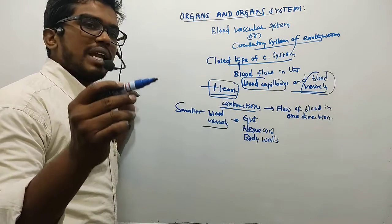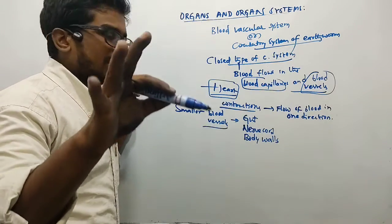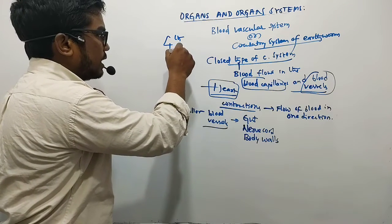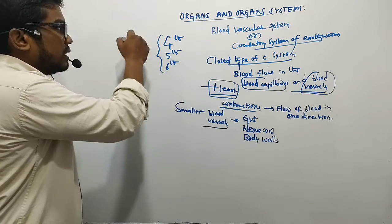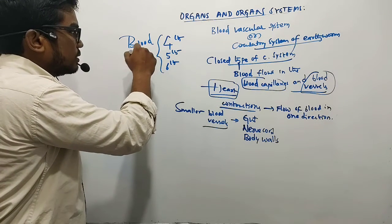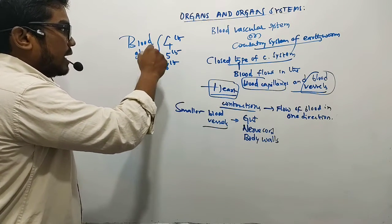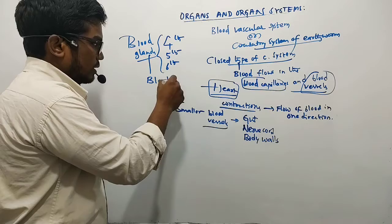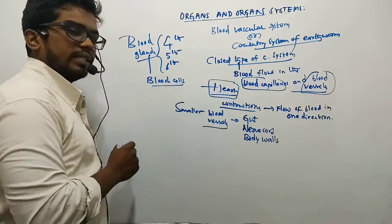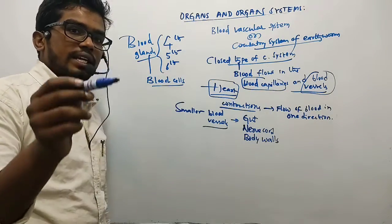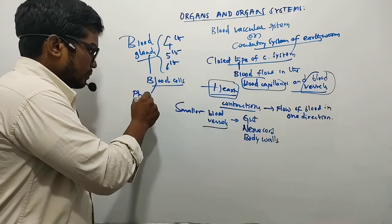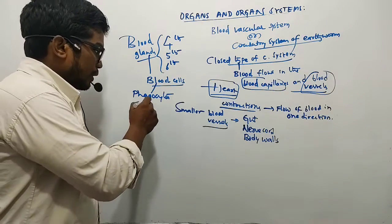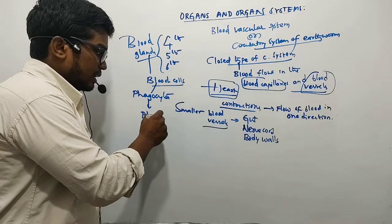There are blood glands present in the fourth, fifth, and sixth segments of the earthworm. These blood glands produce blood cells — specifically phagocytes.